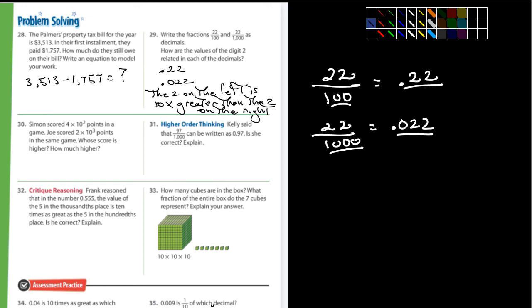Okay. Number 30. Simon scored 4 times 10 to the second points in a game. Joe scored 2 times 10 to the third points in the same game. Whose score is higher? Well, first off, remember, what's 10 squared equal? 10 squared equals 100. What's 10 cubed equal? That equals 1,000. And then it says, Simon scored 4 times 10 squared. So that's 4 times 100 or 100 times 4. So what's that going to be? That's going to be 400.